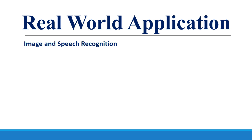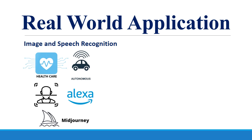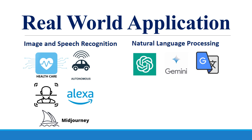There are numerous applications of AI and data science in each and every field. In image and speech processing, we have numerous applications in healthcare, autonomous vehicles, facial recognition, conversational bots like Alexa, and generative AI-based tools to generate realistic videos. In natural language processing, we come across tools like ChatGPT, Gemini, and other language models, which are built to understand and generate human-like language.